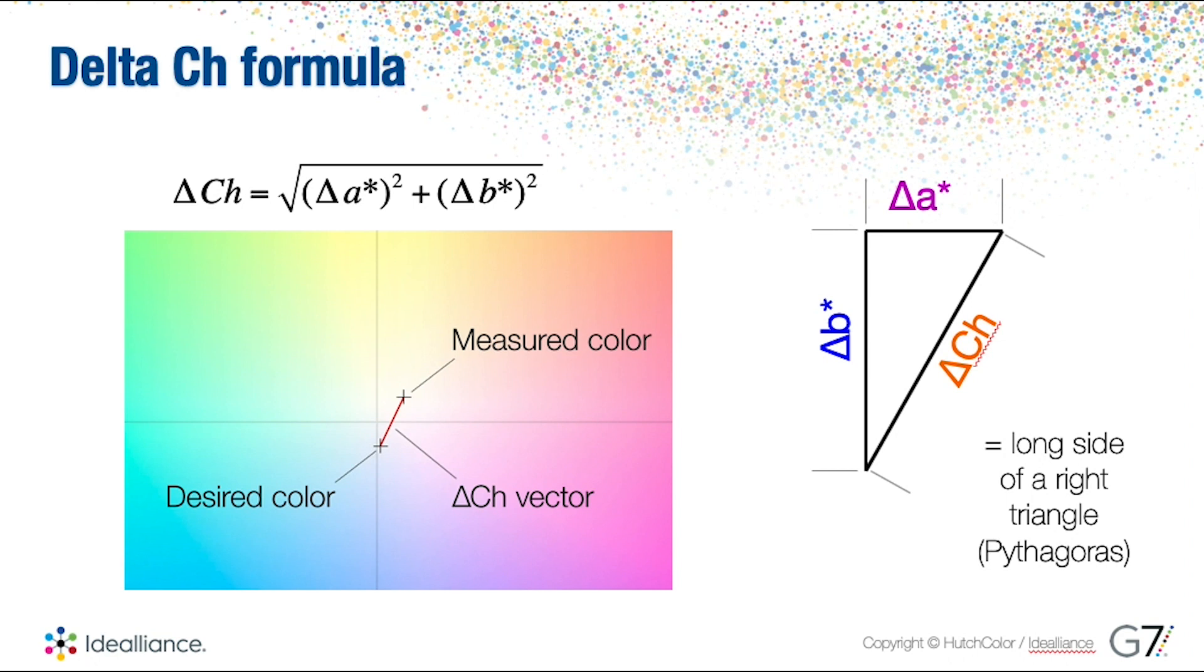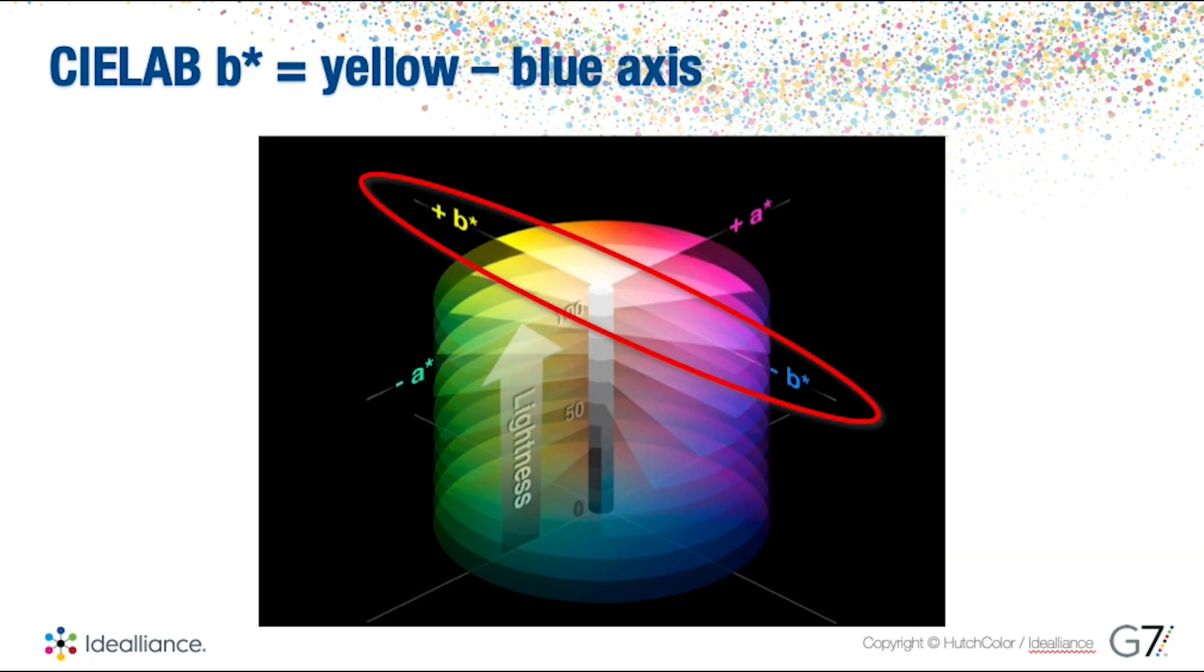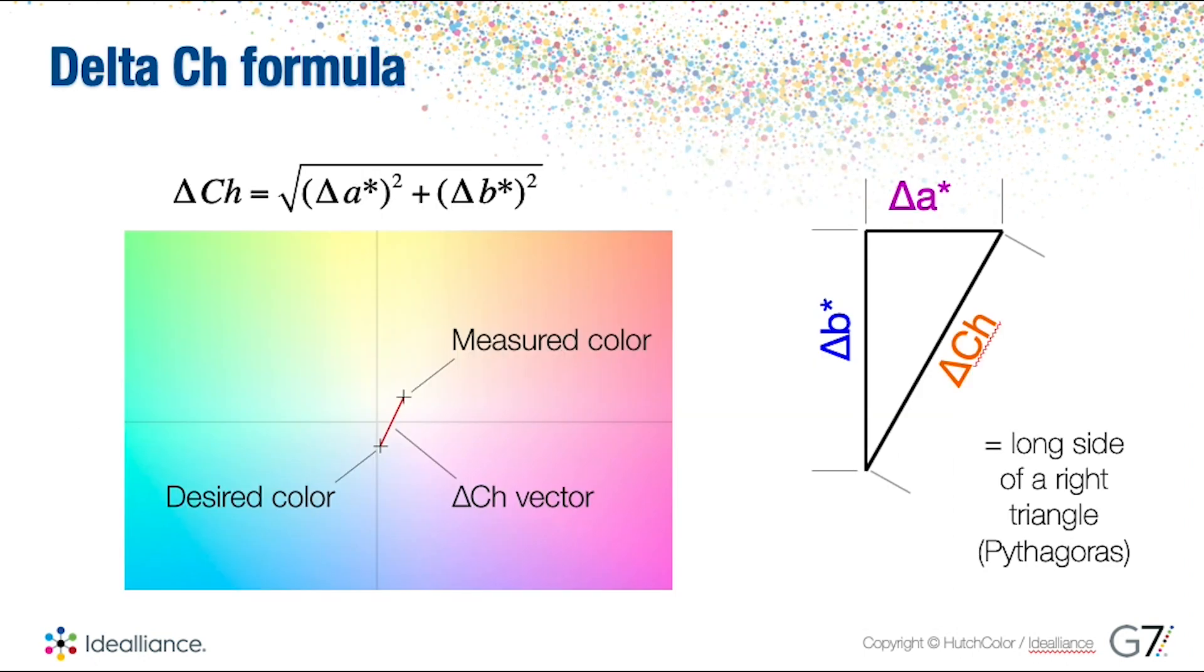You can see here that the calculation is using the a star and the b star from the LAB color space. So there we have our a and b star. The delta CH formula is taking that data—the a star and the b star—from the measured color and the desired color and it is adding it together and it's coming up with the delta CH.